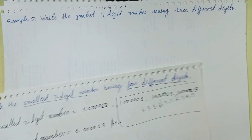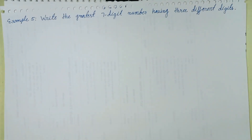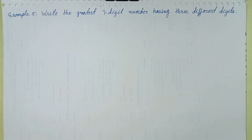This is the required number having only four different digits: one, two, three, four, five, six. The greatest seven digit number having three different digits will be solved in the next episode. See you in the next episode.